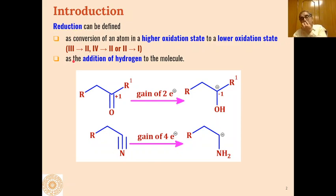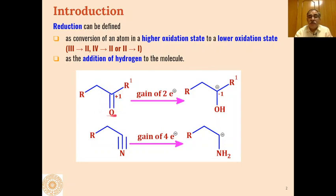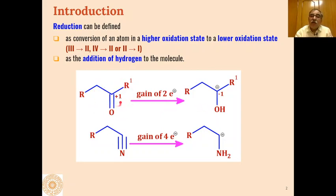A second definition of reduction is that if we add hydrogen to a molecule, that addition of hydrogen is also called reduction. For example, if we have a carbonyl compound — an unsaturated carbon-oxygen bond — and we add hydrogen across this C=O bond, it is converted into an alcohol. So addition of hydrogen to any molecule is also known as reduction; that means a carbonyl group is reduced to a hydroxyl group.